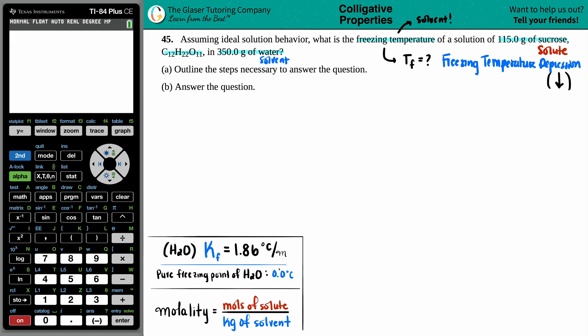So get rid of any answer choices that are higher than zero. So you can play it smart. Get rid of some answer choices already that you know aren't going to be the right answer. Now with that in mind, let's actually find out the freezing temperature.